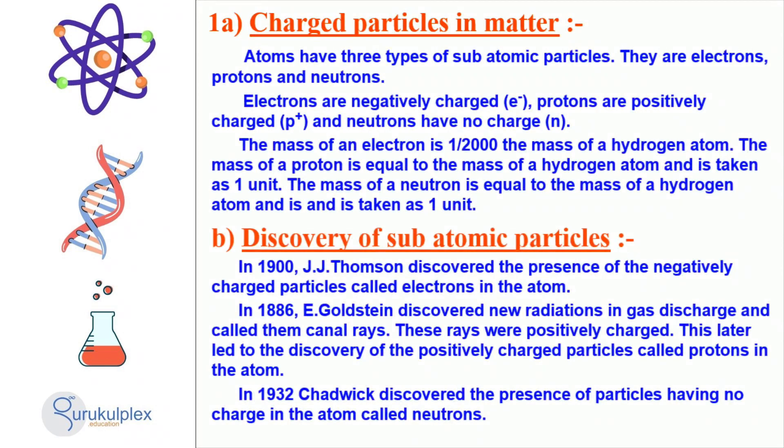Atoms consist of three distinct types of subatomic particles: electrons, protons, and neutrons. Electrons have a negative charge, protons are positively charged, and neutrons have no charge.